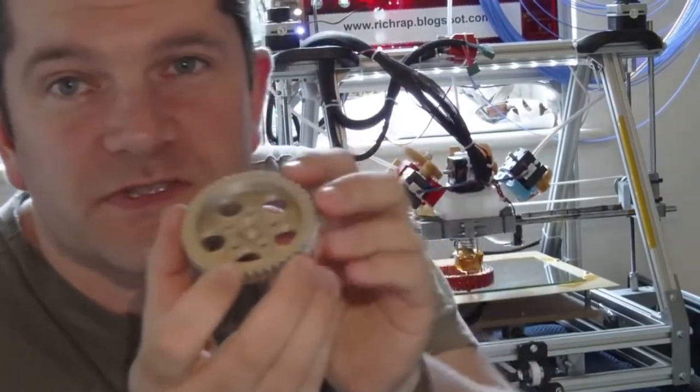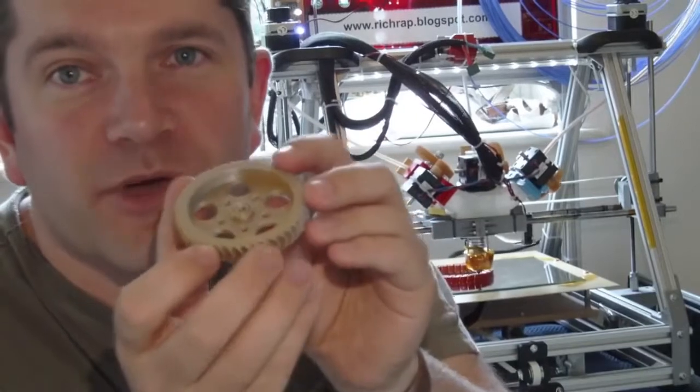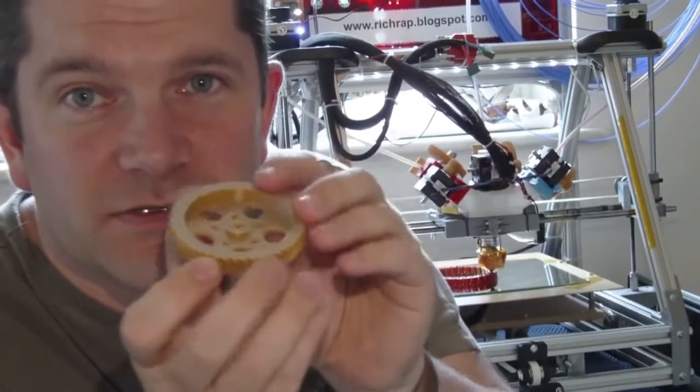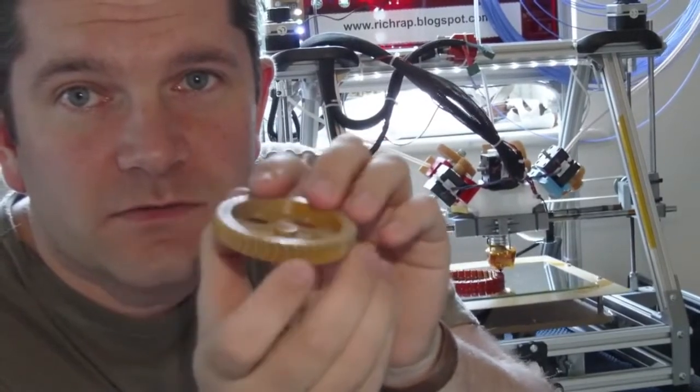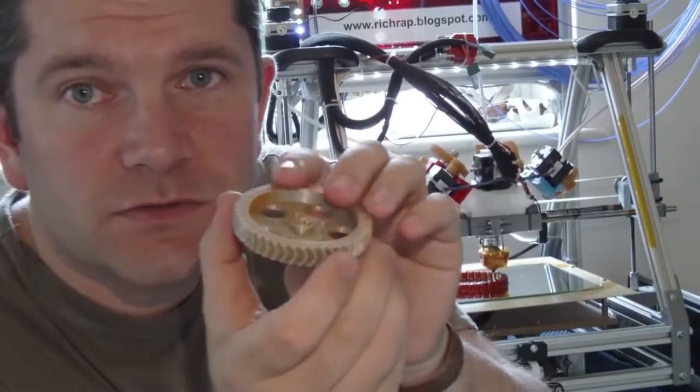And this one's pretty cool. This is a herringbone gear for an extruder. And as you turn it, you'll see, hopefully, it goes from silver to orange and back again.